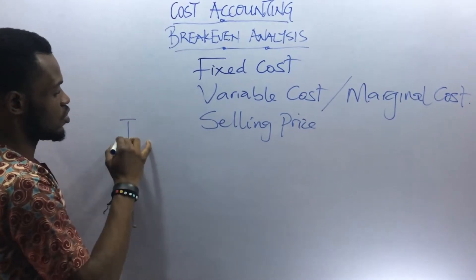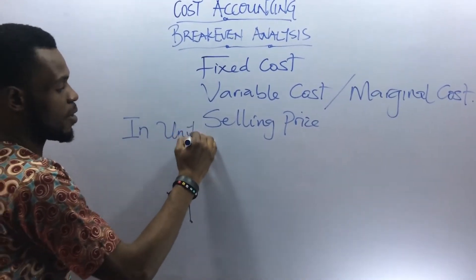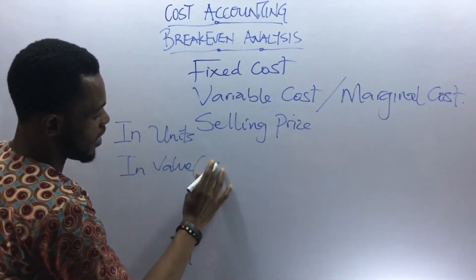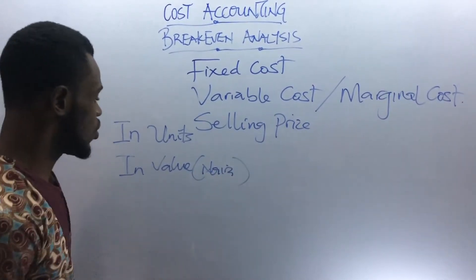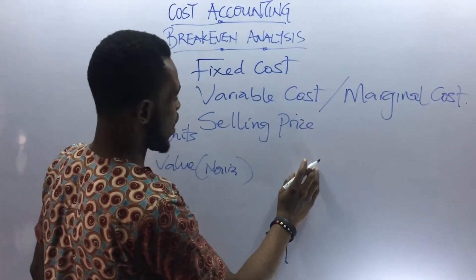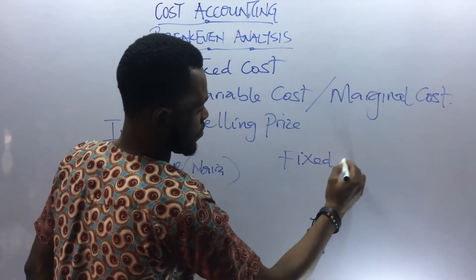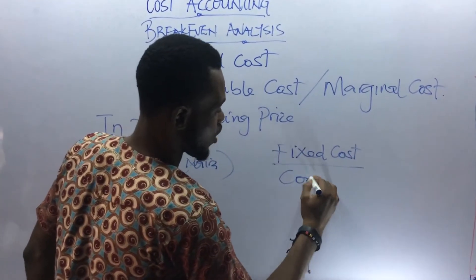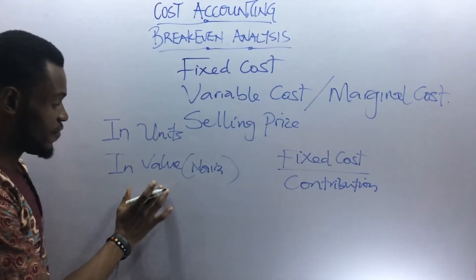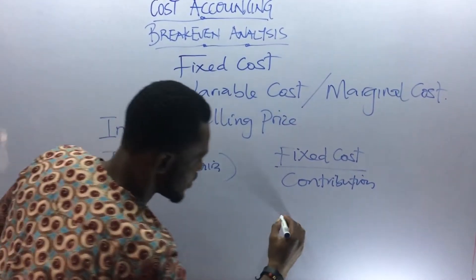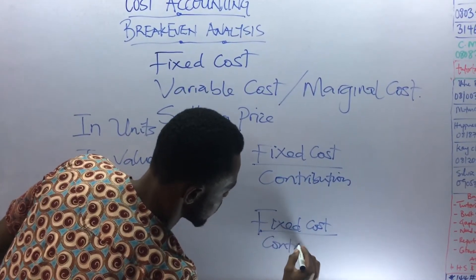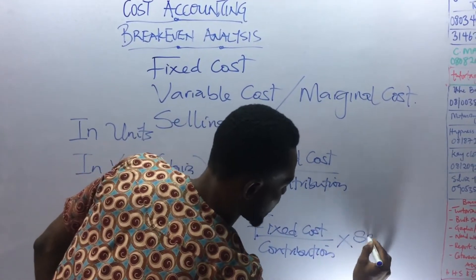If you have been asked to answer a question under the break-even analysis in units, the formula is: fixed costs divided by contribution. And if you are asked to answer a question under value — break-even analysis in Naira — it is the same thing as fixed costs over contribution, times the selling price.